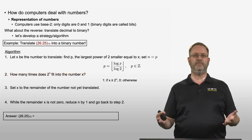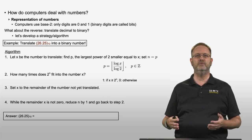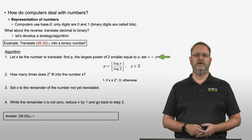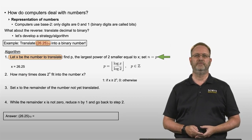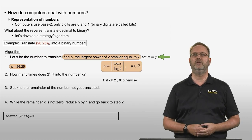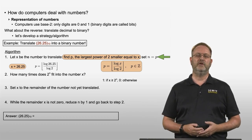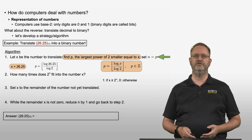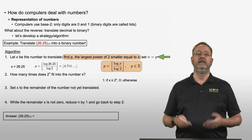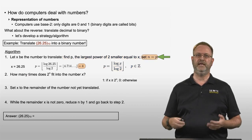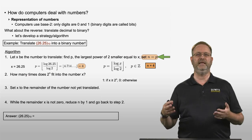Let's do an example using this modified algorithm for binary numbers: translate the decimal number 26.25 into a binary number. Step 1: let x equal 26.25. We find p, the largest power of 2 smaller or equal to x, using the formula: floor of log(26.25) divided by log(2). Punching these into a calculator gives 4.714..., which rounds down to p equal to 4. We then set n equal to 4.